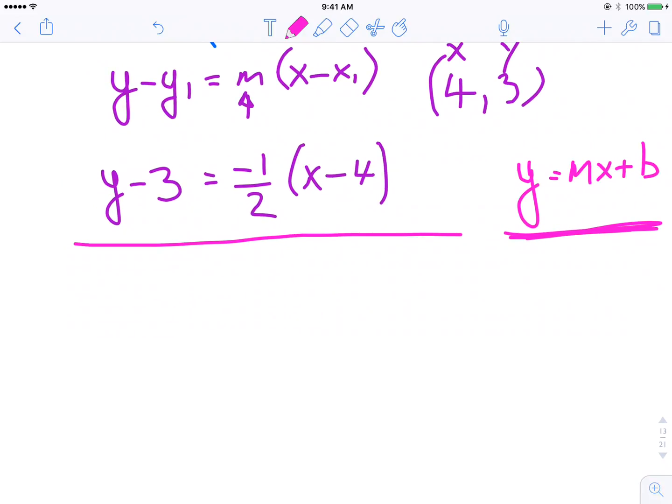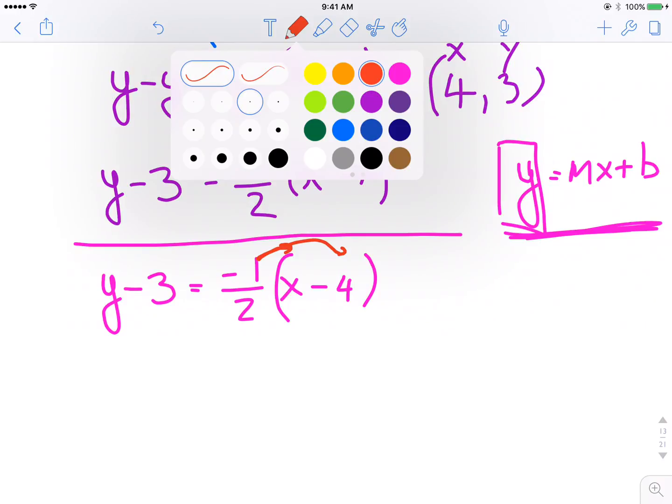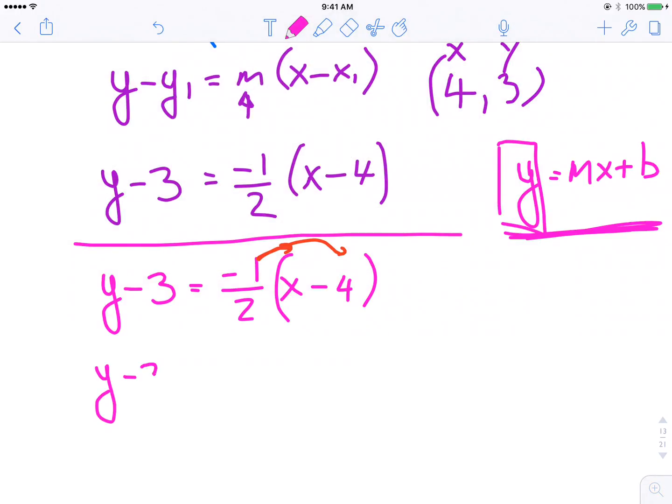So we're going to take our equation, I'm just going to rewrite it here. And what we need to do is manipulate our equation so that we get y all by itself. The first thing that starts with is distributing this negative 1 half in. So this becomes y minus 3 is equal to negative 1 half x, or plus, because a negative times a negative is a positive, 1 half times 4 is 2.